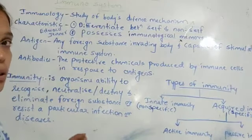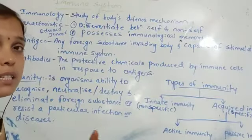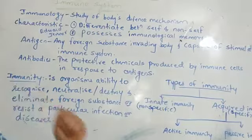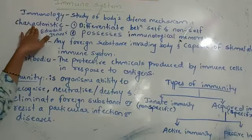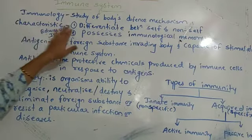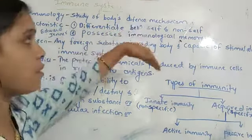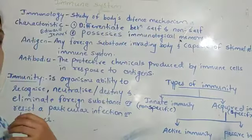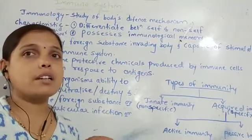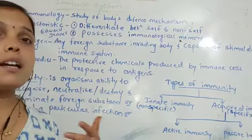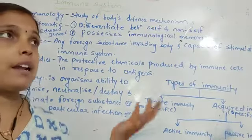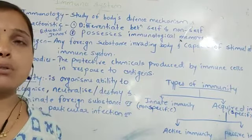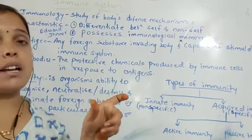The immune system is made up of cells, tissues, and organs that together comprise the complete immune system. One of the most important characteristics of the immune system is its ability to differentiate between self and non-self.